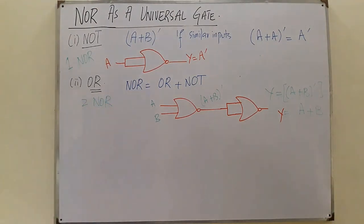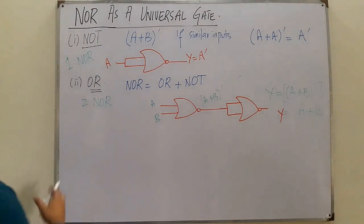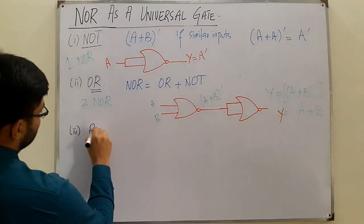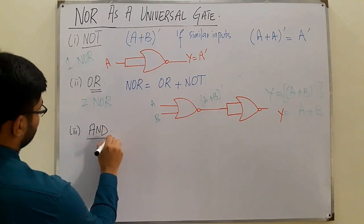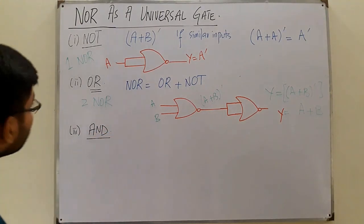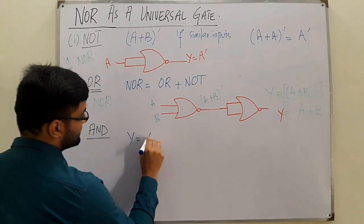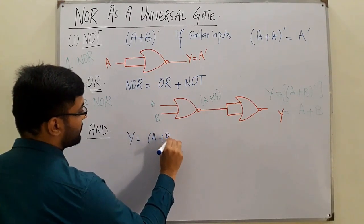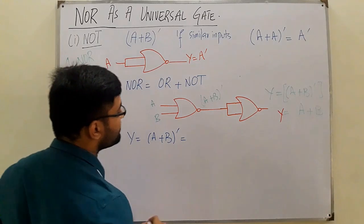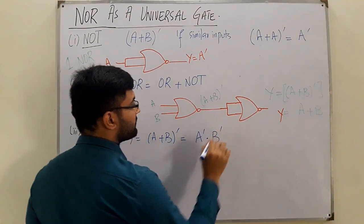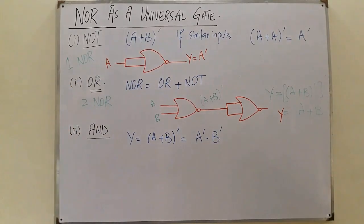The third is the AND gate. The NOR gate is used as an AND gate. From the NOR function (A + B)', if you apply De Morgan's law, you get A' · B'. This means you need to invert the inputs.